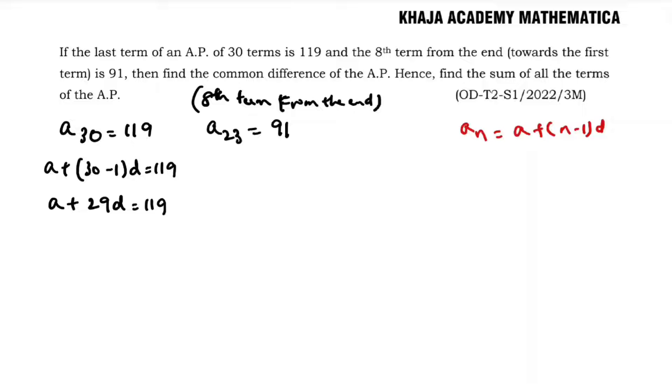In the same way, a23—I'll calculate for a23. a23 will be a + (23-1)d = 91. So a + 22d = 91.